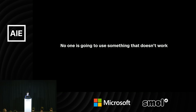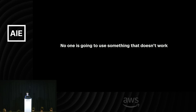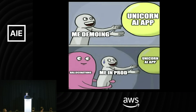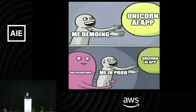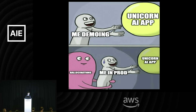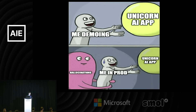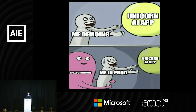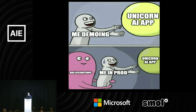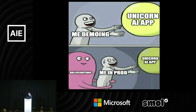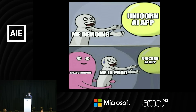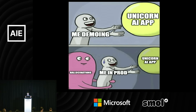AI apps have this unique property — they're very demo-savvy. You'll demo it, it looks super good, you'll show it to your coworkers, and then you ship to prod. And then suddenly, hallucinations come and get you. So we always have this in the back of our head when we're building.